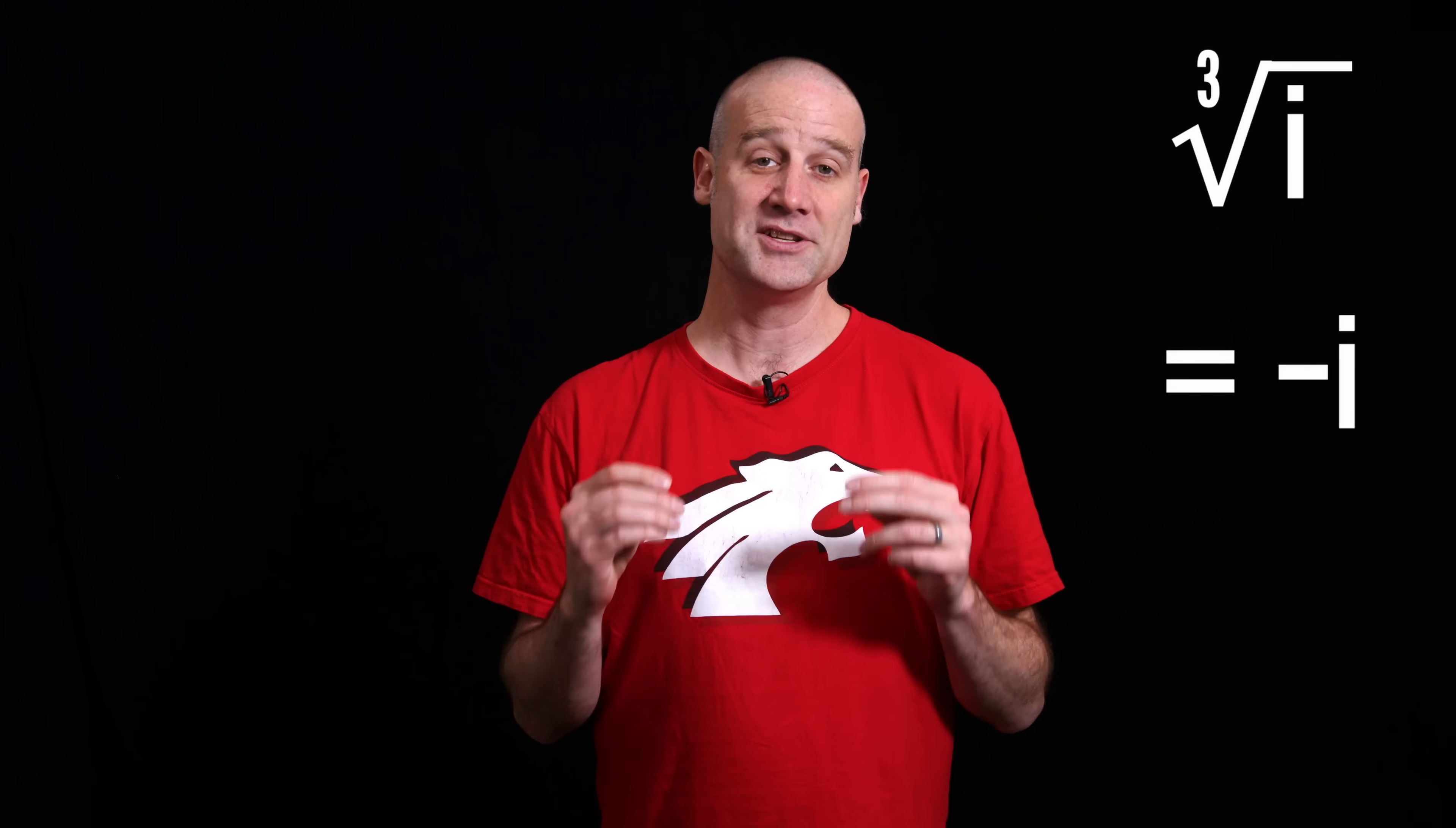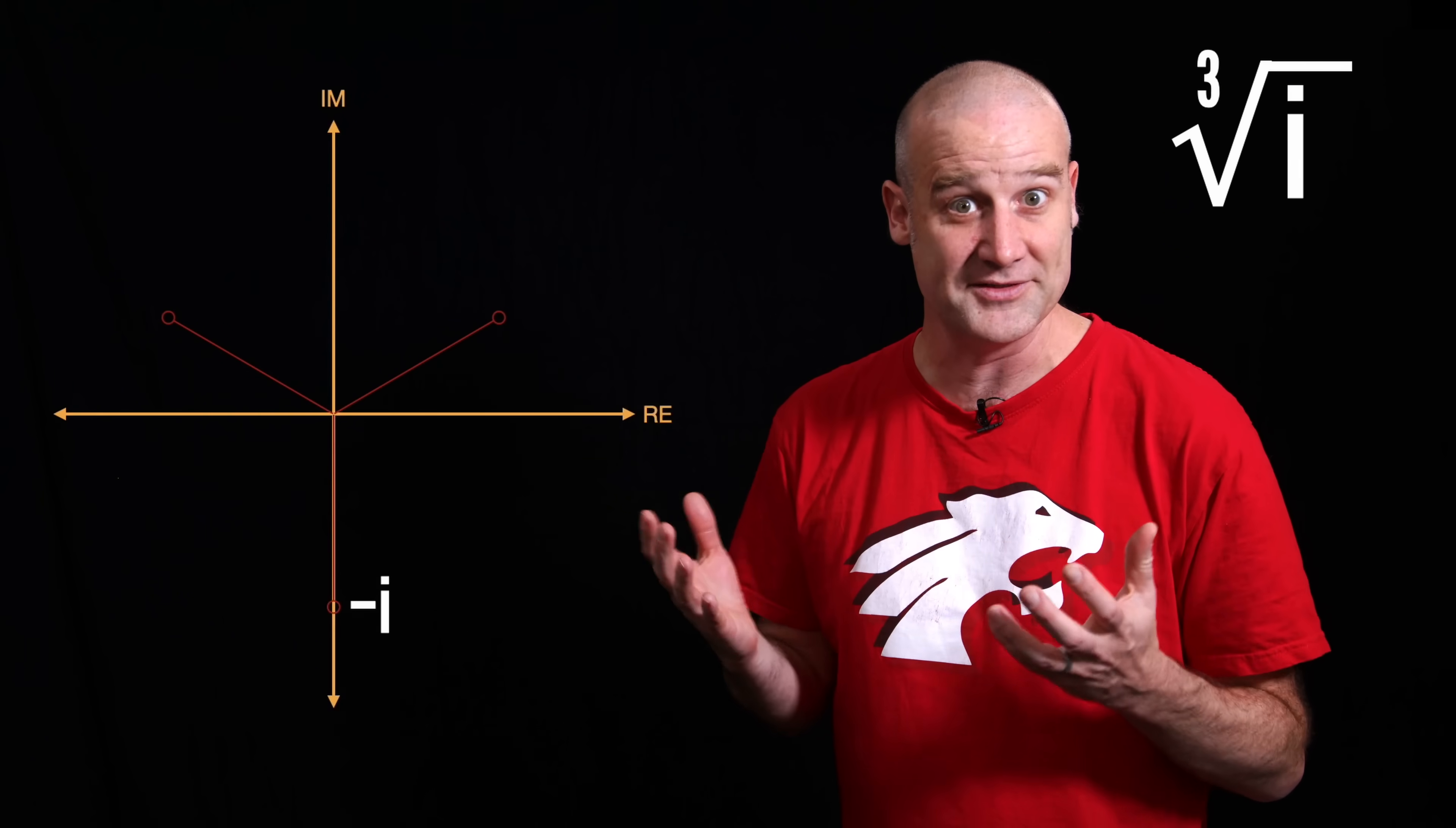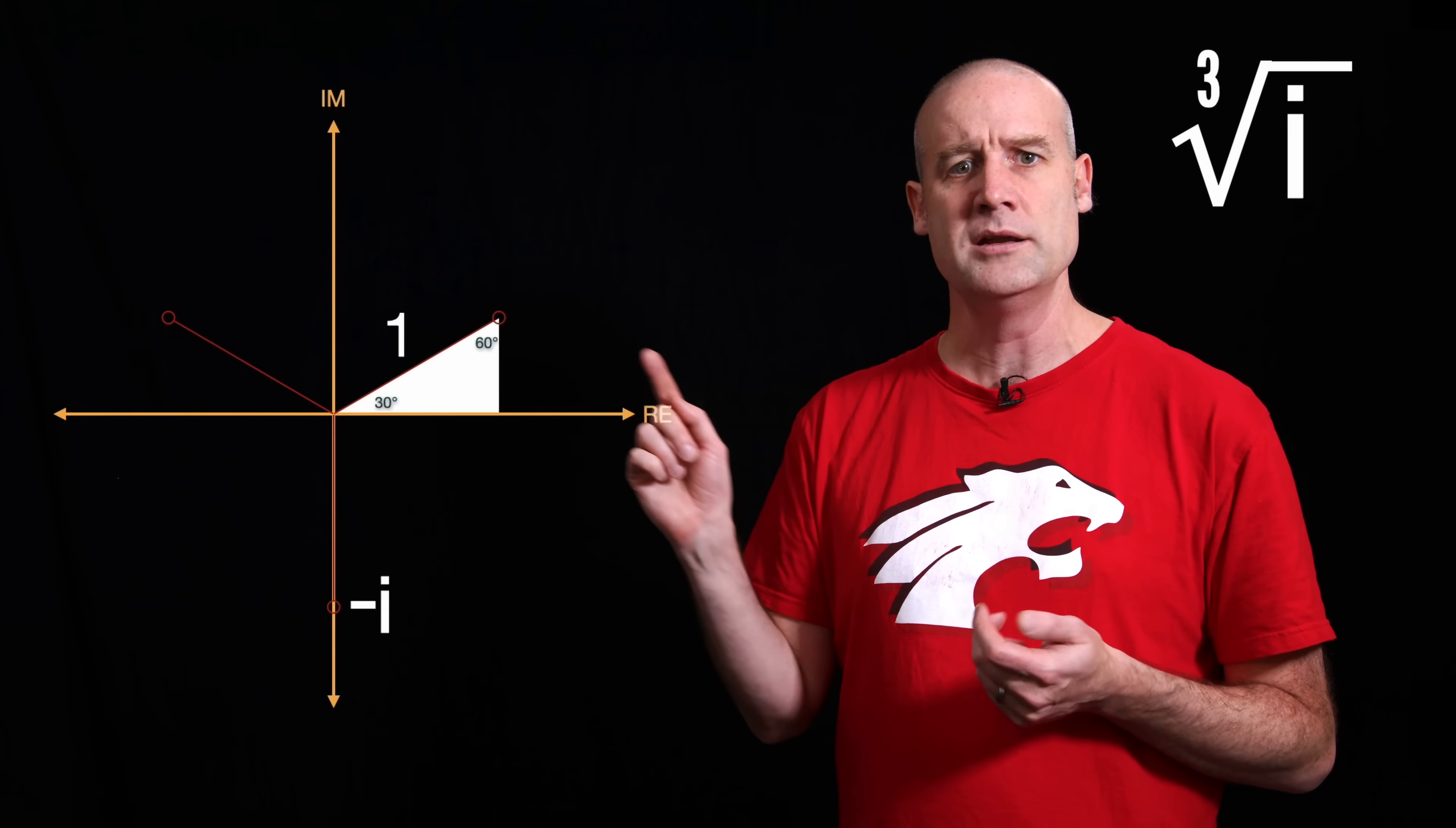What we can do is work it out geometrically. With our axes, we've got our imaginary axis up and down, and the real axis side to side. And our first solution is just negative i. We can put that in down there. And just like you'd have positive and negative square roots, which would be on either side of the real axis, in this case, we can just swing those up. So they're 120 degrees apart, and that gives us all three solutions. The question now is, what are those top two ones equal to? Well, guess what we can fill in under here? Yeah, you know it. It's a triangle. Same triangle as before. It's got a 30 degree angle and a 60 degree angle.